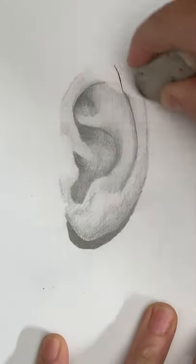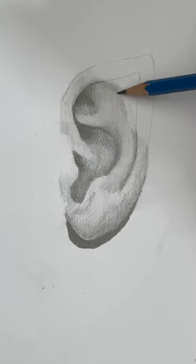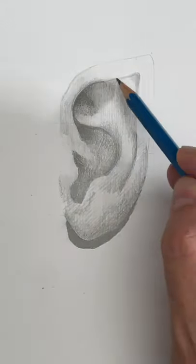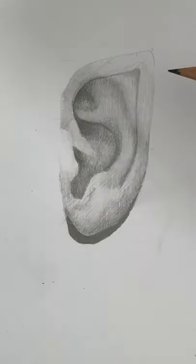Now let's turn this human ear into an elf ear, or a Vulcan ear. Erase the top of the helix. Create a point. Now just join the helix back up, and clean up the shading.